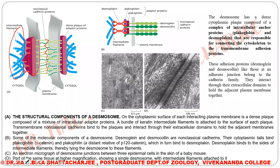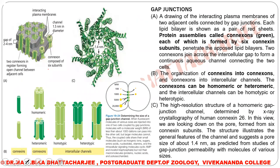Finally, coming to the last category of junctions: the communicating junctions. One more function of the desmosome is that it connects the intermediate filaments of one cell to those in the next cell — the intermediate filaments are connected between cells by the presence of these non-classical cadherin proteins. Now we move on to the next category: gap junctions. The main function of gap junctions is to allow the passage of small water-soluble molecules from cell to cell.